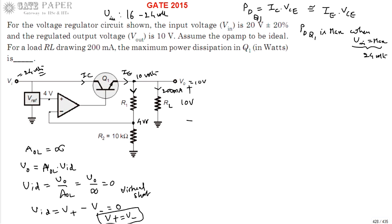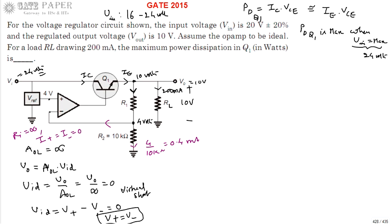Because of the virtual short, the voltage across the feedback resistor is also 4 volts. Knowing the voltage and resistance, the current through that resistor is 4 divided by 10 kΩ, which is 0.4 milliamperes. An ideal op-amp has infinite input impedance, so no current flows into either input terminal. Therefore that 0.4 mA plus 0 mA gives a total of 0.4 milliamperes flowing forward.